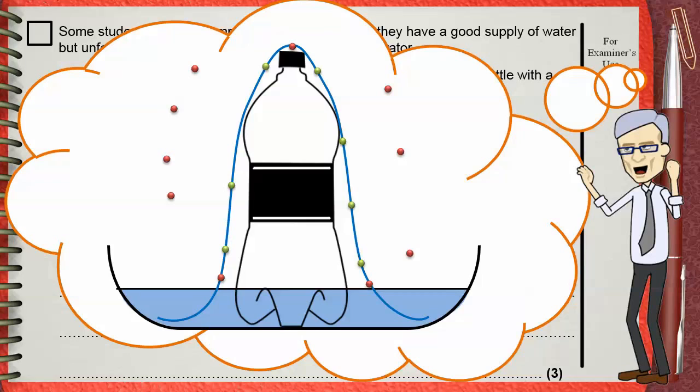Water molecules that have escaped will be replaced by other water molecules from the dish of water. Evaporation continues, and the cooling effect continues, so the bottle is kept cooled.